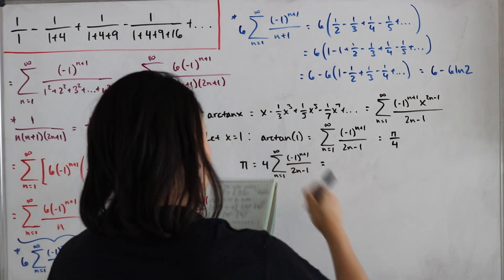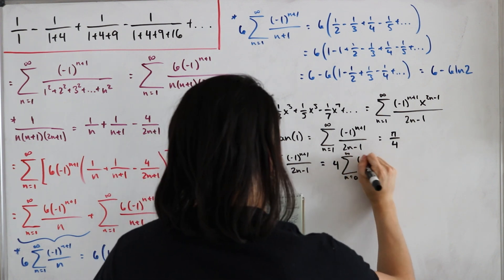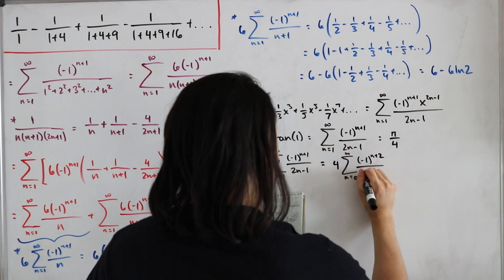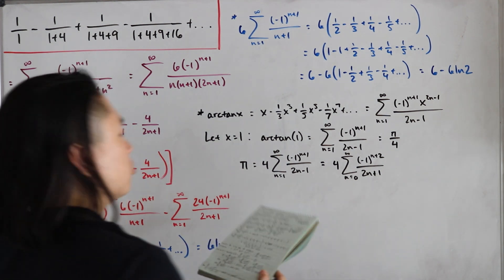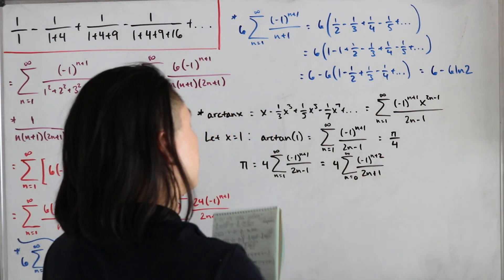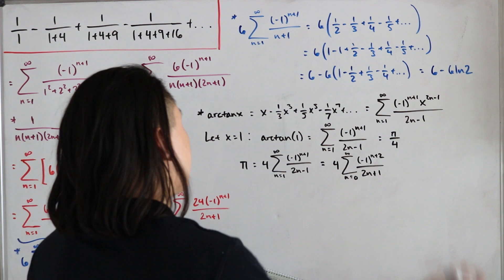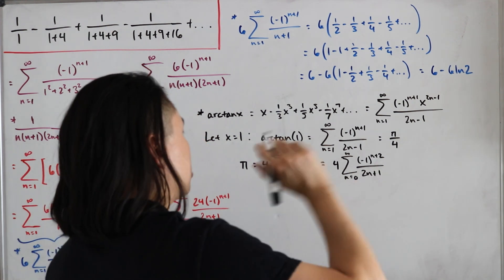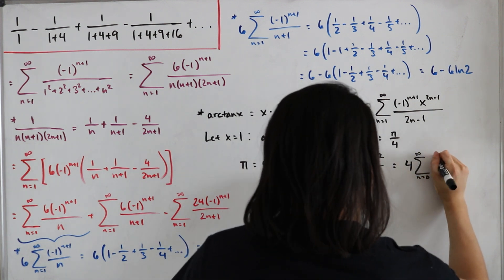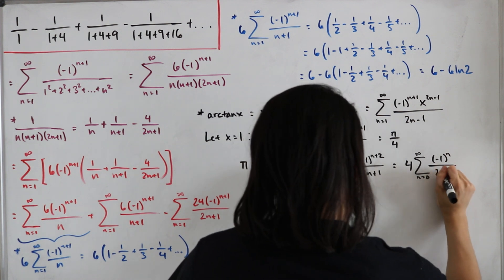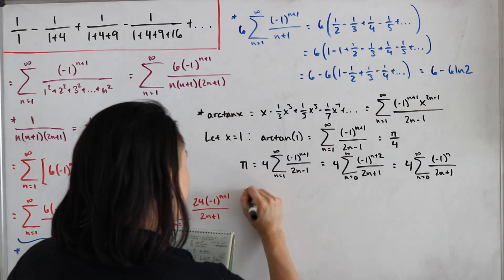We reindex the sum to start at n=0. Shifting the index changes (-1)^(n+1) to (-1)^(n+2), and by parity this equals (-1)^n, while 2n-1 becomes 2n+1. So π = 4·Σ_{n=0}^∞ (-1)^n/(2n+1). Multiplying both sides by 6 gives 6π = 24·Σ_{n=0}^∞ (-1)^n/(2n+1).